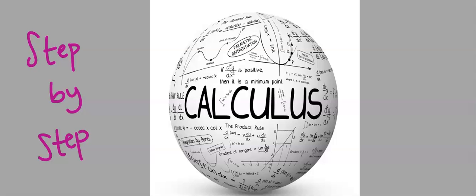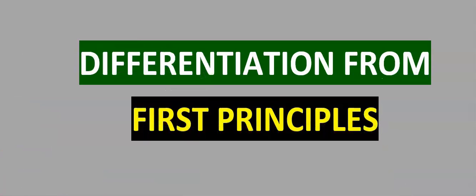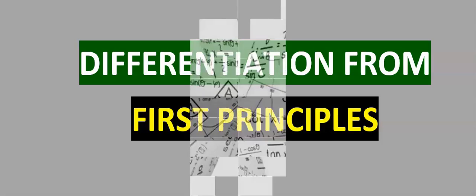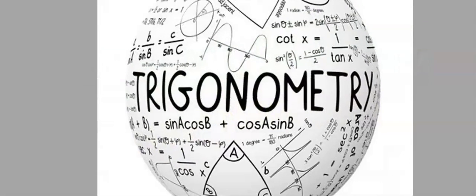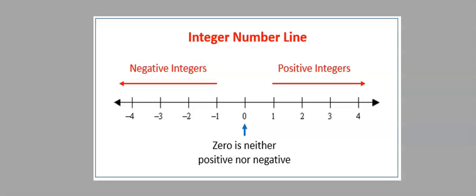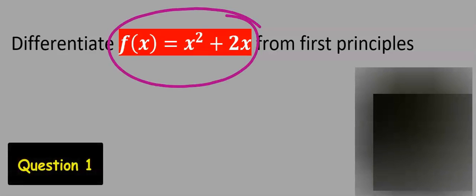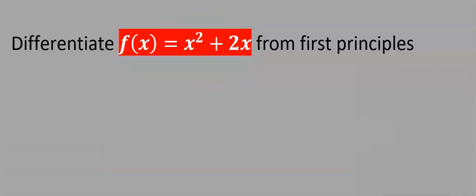In this calculus video, we are going to learn in a step-by-step method how to differentiate some basic functions from first principles. The derivative of trigonometric functions from first principles is treated in a separate video. To apply derivative from first principles, the function under consideration must exist and the generated answer must be found on a number line if the value of x is replaced with a number.